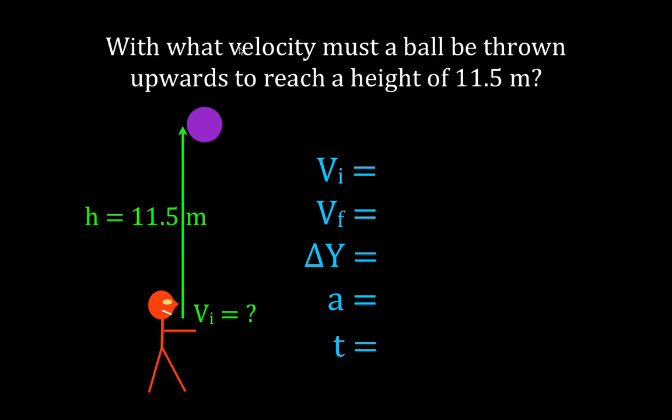Now we're only given really explicitly one piece of information, that is that we want the ball to go to a height of 11.5 meters. But there is some other information that we know that you need to recognize that's not explicitly stated in the problem. When the object reaches the top of its path, of course it's going to come back down. When it reaches the top of its path it's going to have a final velocity or a velocity of zero meters per second, so we put down the final velocity is zero.